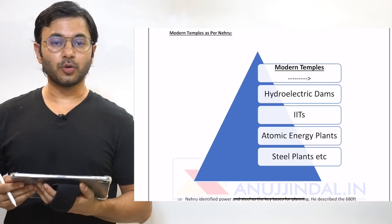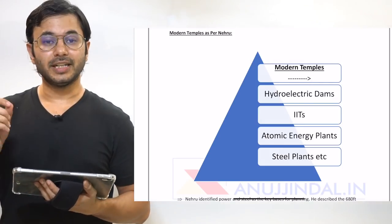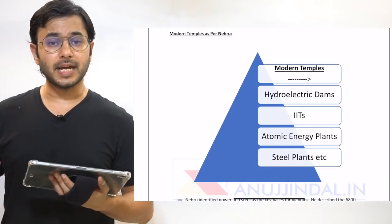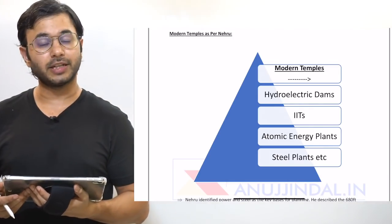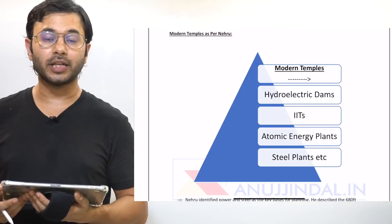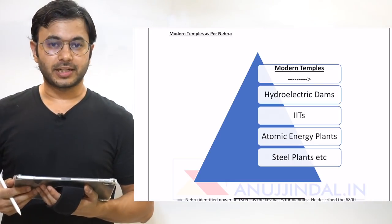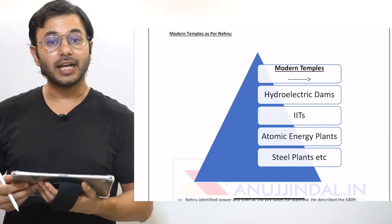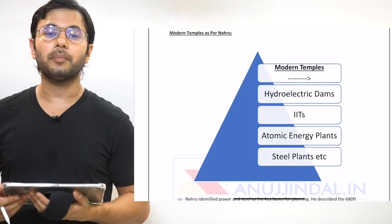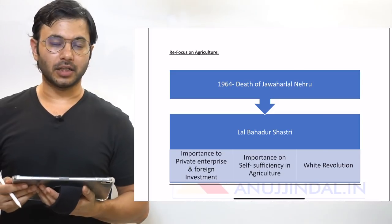As part of this model, Jawaharlal Nehru gave the term 'modern temples.' He said that instead of investing in conventional temples, we should invest in industries which can create growth and development — and therefore these can be termed as temples. Projects like hydroelectric dams, steel plants, IITs, and atomic energy institutes were a part of modern temples. However, agriculture took a backseat under the Mahalanobis model.